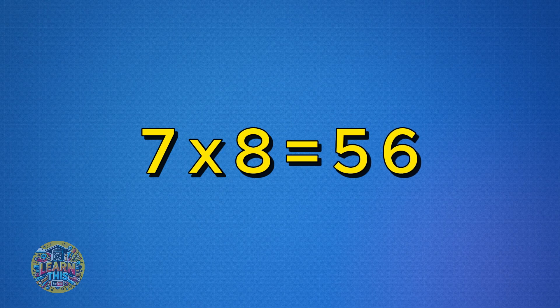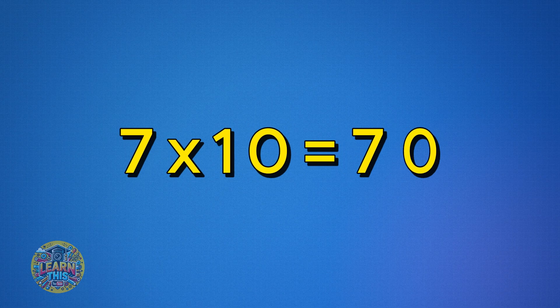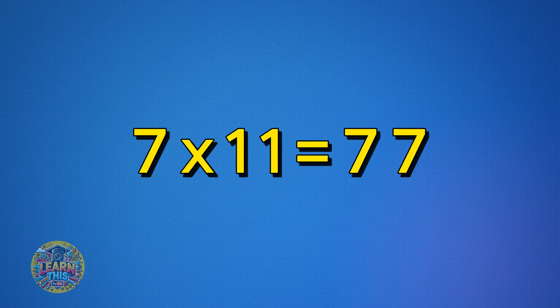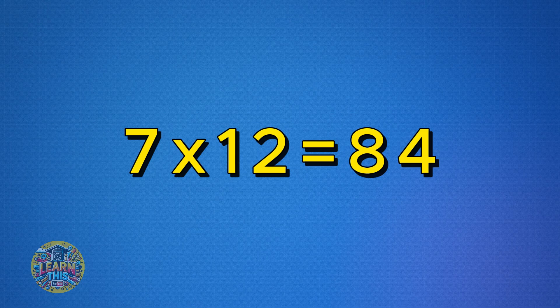Seven times seven is 49. Seven times eight is 56. Seven times nine is 63. Seven times ten is 70. Seven times eleven is 77. Seven times twelve is 84.